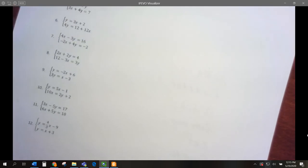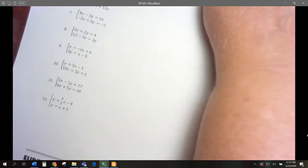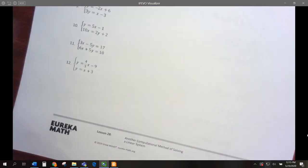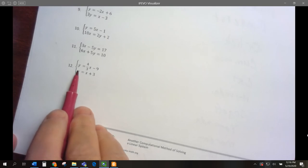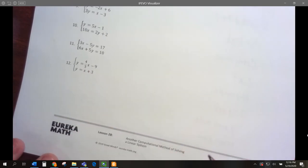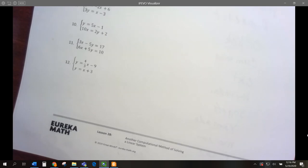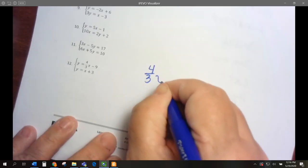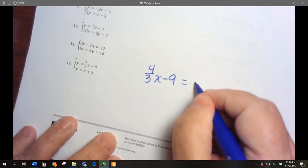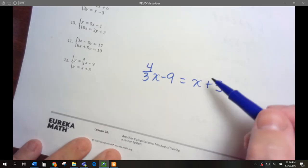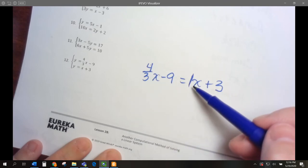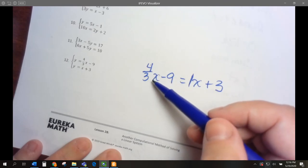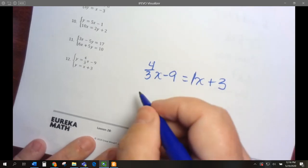Let's go on to problem number 12. Notice these are both equal to y. If 4 thirds x minus 9 is y and x plus 3 is y, if these both equal y, then they have to equal each other. So we can write 4 thirds x minus 9 equals x plus 3. Remember we've got an invisible 1 here. Which is smaller, 4 thirds or 1? 1 is smaller. So we subtract the x from both sides.